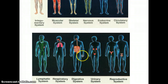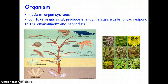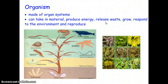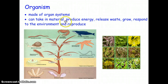The one we're going to be focusing on is the digestive system. When you take organ systems and put them together, they make something called an organism, like you and I. An organism is made up of a bunch of different organ systems, and organisms can take in material, produce energy, release waste, grow, respond to the environment, and reproduce. If something does all of these things, it's considered an organism.